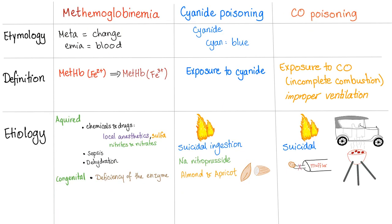Whenever you are analyzing a table, you have to do two things. Number one, go through the whole table vertically — discuss methemoglobinemia completely first, then shift to cyanide poisoning, then CO poisoning. Once you're done with that step, do it horizontally one more time, comparing them by definition, by etiology. This is the best way to study.